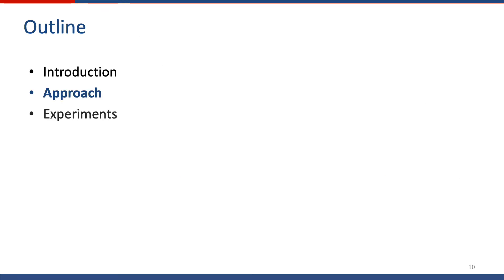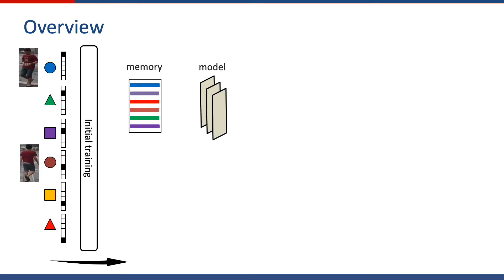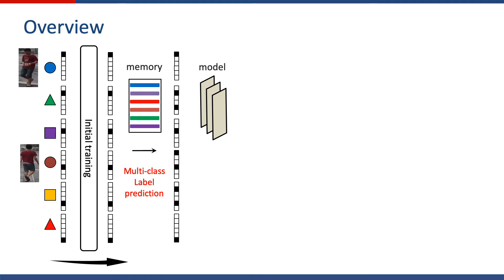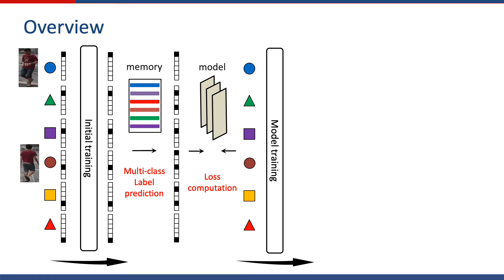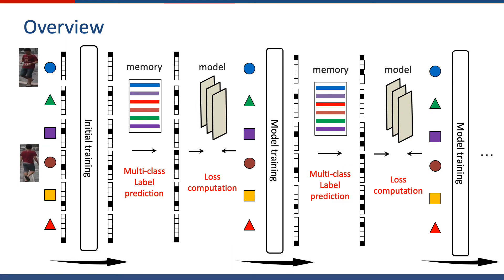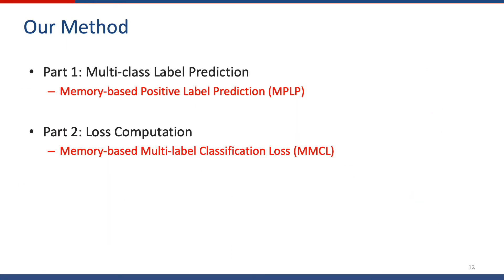Next, I will give our approach in detail. Given unlabeled images, we assign them with a single-class label to train an initial model. Then we use the feature memory for multi-class label prediction. The updated model is used to compute the loss, and we then train the model. This process runs iteratively to boost performance. Our method contains two parts: multi-class label prediction and loss computation.